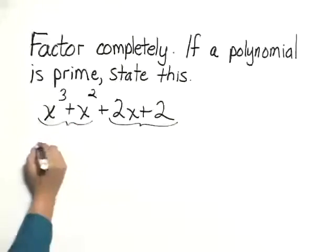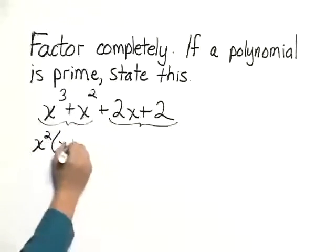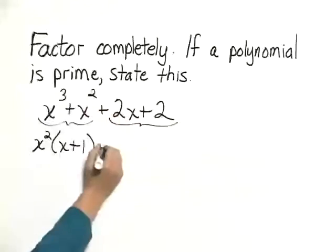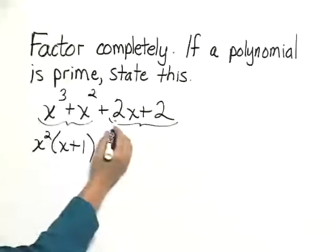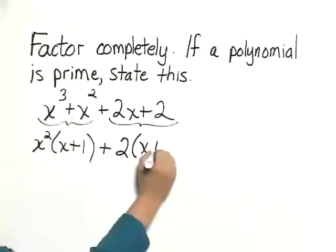We can factor out an x squared out of the first two terms. That gives us x squared times x plus 1. Then we write the plus sign. And we can factor a 2 out of the second pair of terms. It gives us 2 times x plus 1.